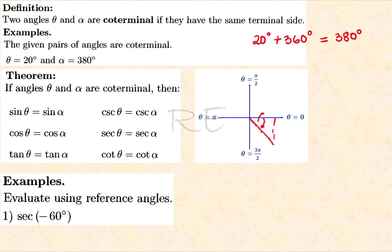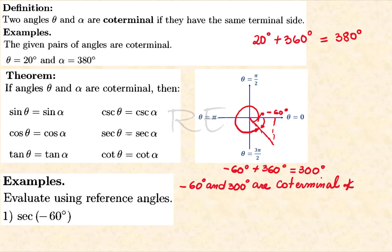Negative 60 will be going clockwise. The angle coterminal to negative 60 will be negative 60 plus 360, which is 300 degrees. Negative 60 and 300 are coterminal, so we are going to use reference angles to evaluate secant of negative 60 degrees, which is equal to secant of 300 degrees.